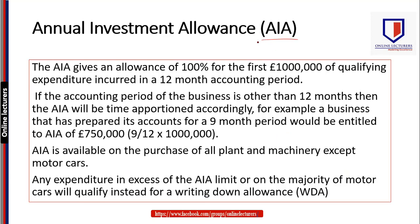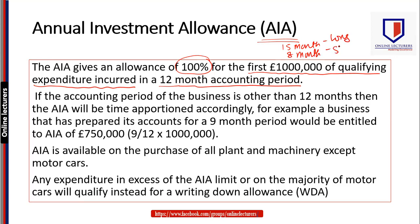As far as the Annual Investment Allowance is concerned, for the tax year 2021, the AIA will be available for the first £1 million of qualifying expenditure incurred in a 12-month accounting period, and you can get 100% of that first £1 million. This £1 million limit is for a 12-month period. If the accounting period is 15 months or 8 months — a long or short accounting period — you will get the AIA adjusted accordingly. For a short accounting period the limit is reduced, and for a long accounting period it is proportionally more.